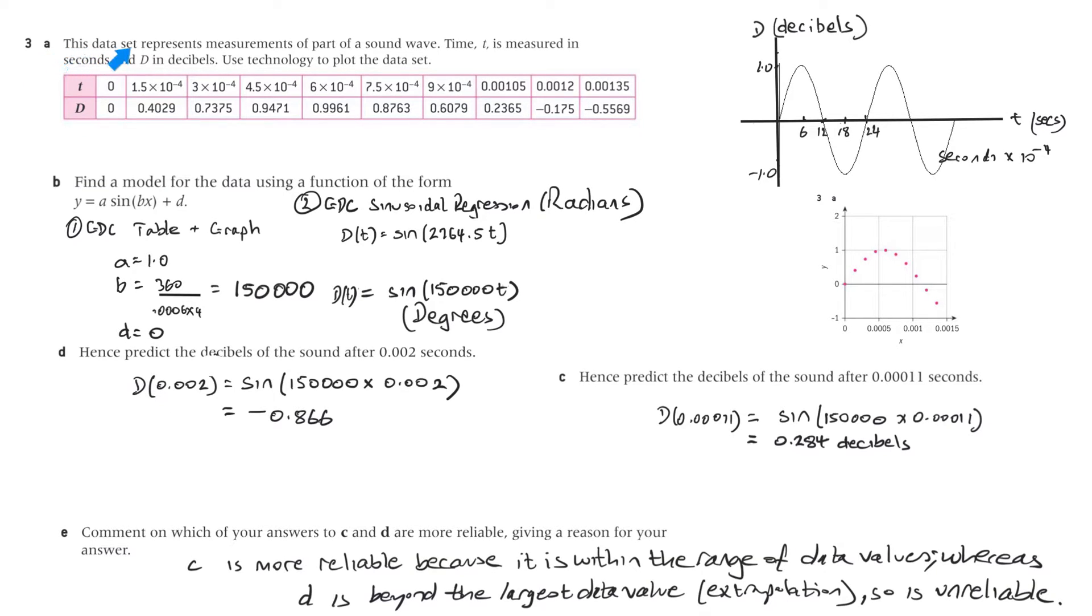Question 3a. This data set represents measurements of part of a sound wave. Time t is measured in seconds and d in decibels. Use technology to plot the data set. Well, I use the GDC and I put these in the table form, and then I use table and then graph. And I looked at the graph and I interpreted these results here. I could see that the amplitude was 1. So here's my diagram, and that's just copied from the GDC.